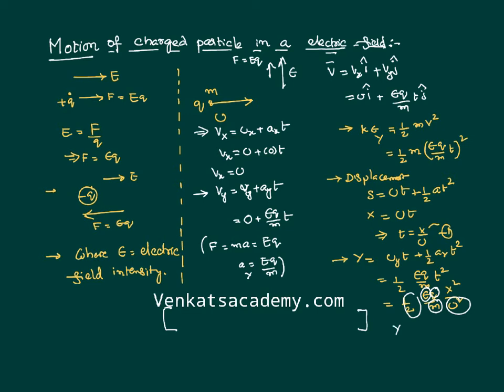Therefore, Y equals all constants into X squared. Y equals KX squared is the mathematical representation of a parabola. This means the charged particle is going to take a parabolic path. It is not going to move along a straight line; rather, as a positive charge, it curves downward like this.